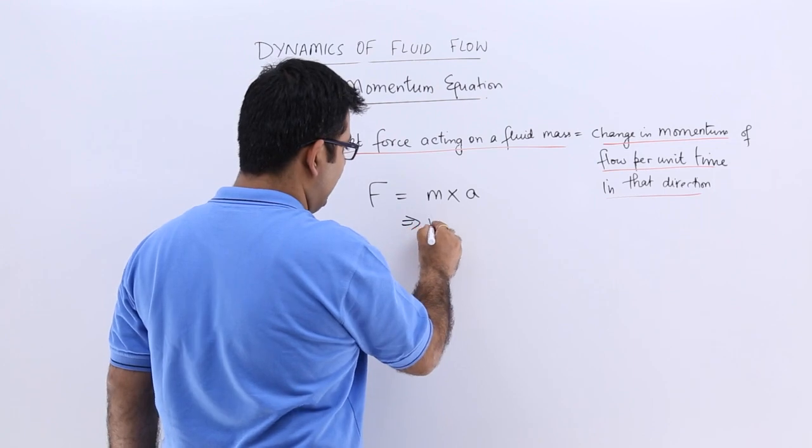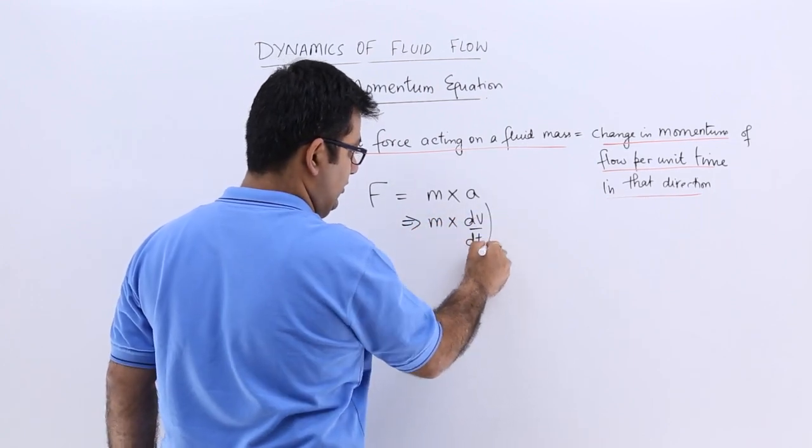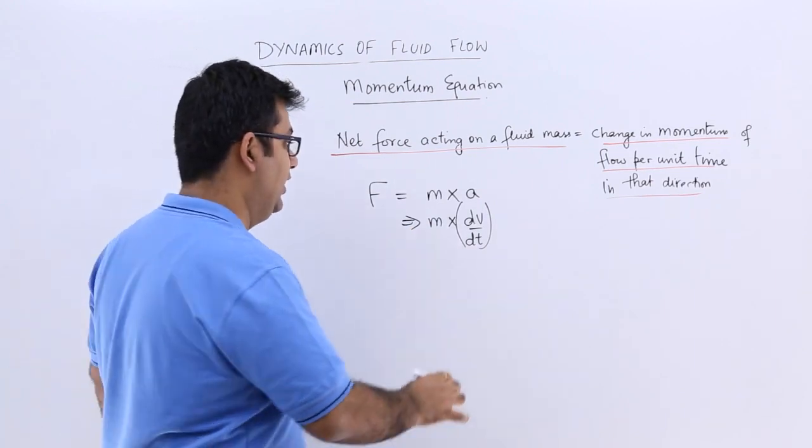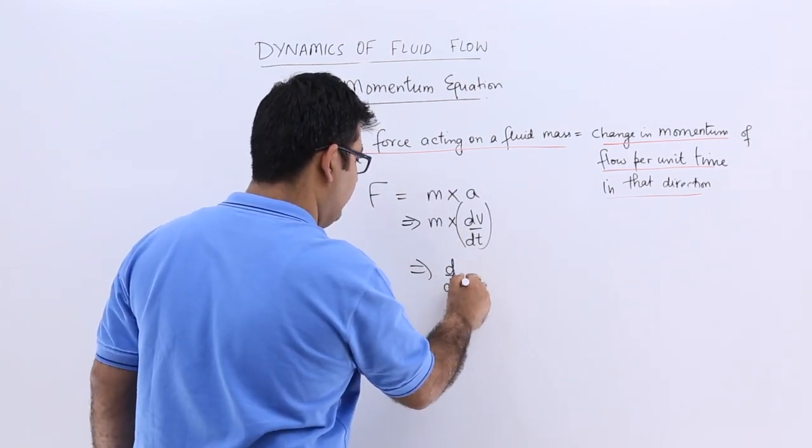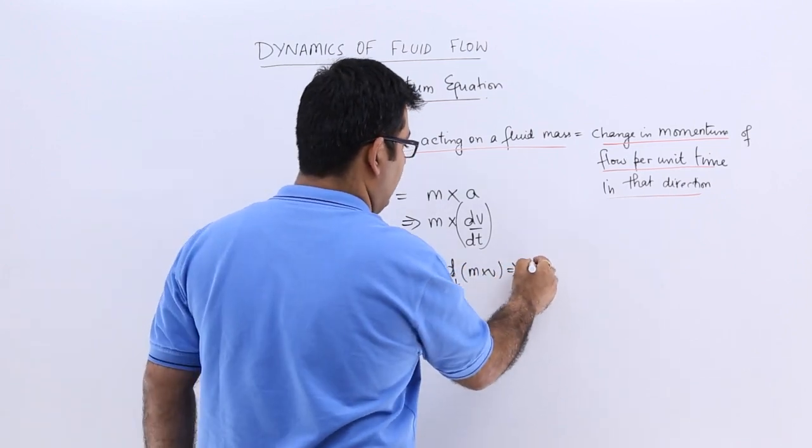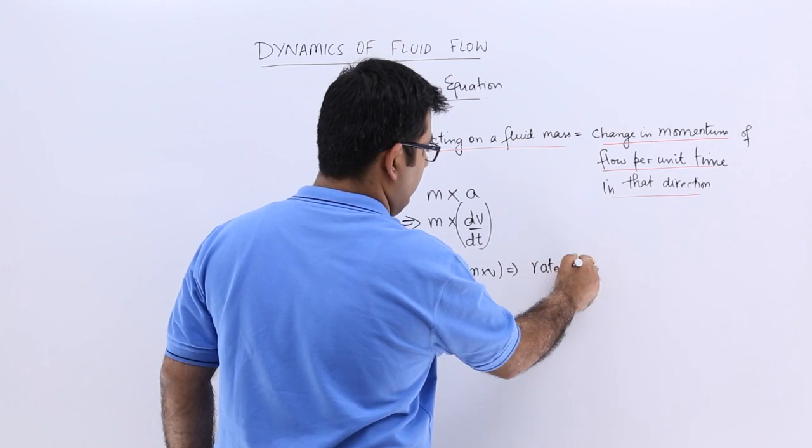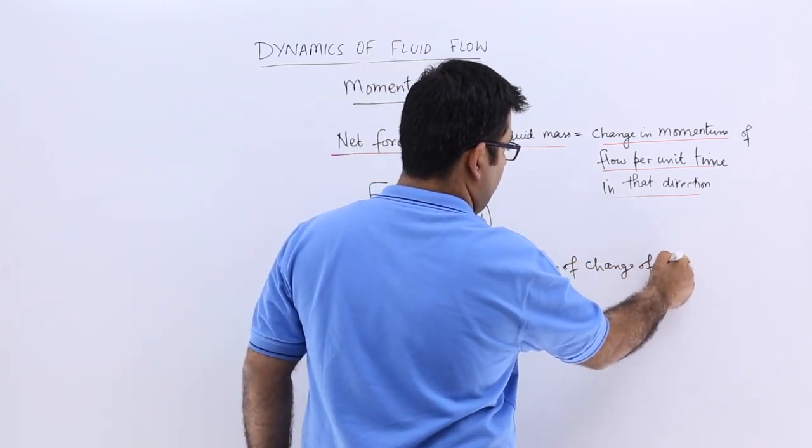Now what is acceleration? Acceleration is the rate of change of velocity, and if I combine this you will get d by dt of m into v which is the rate of change of momentum.